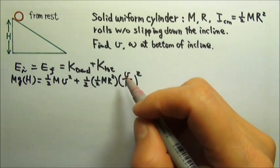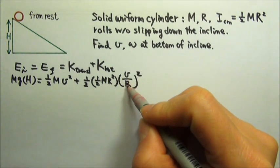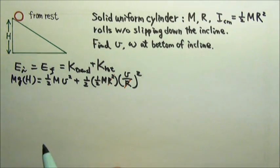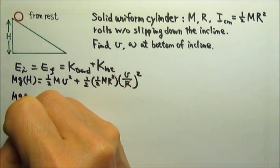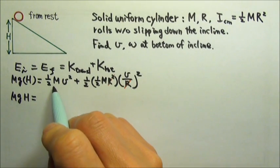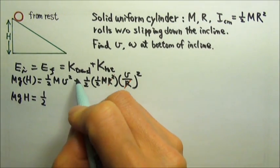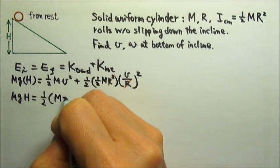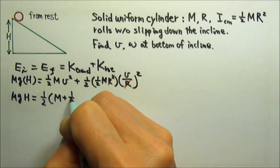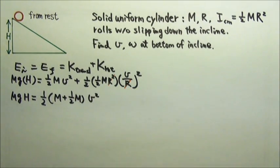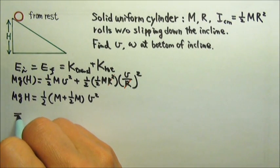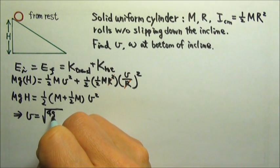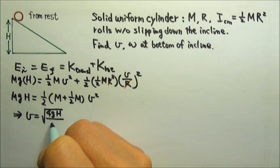In this particular case, the r's happen to cancel because this is 1 over r² and this r², they cancel. So on this side, I have mgh. On this side, I can factor out the 1/2. I can factor out the v². And in here, I would have m plus half m. We can cancel the m. So we'll get v to be square root of 4gh over 3.